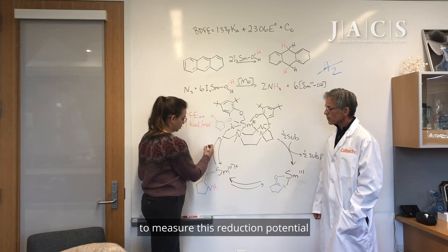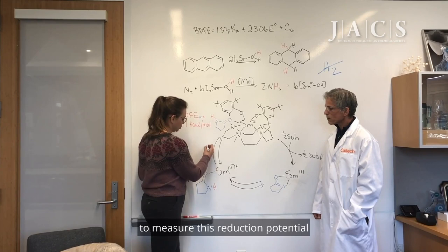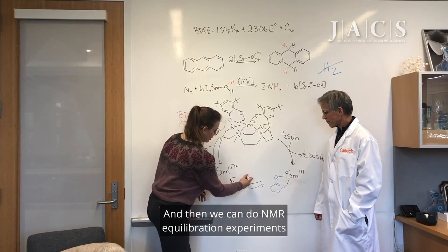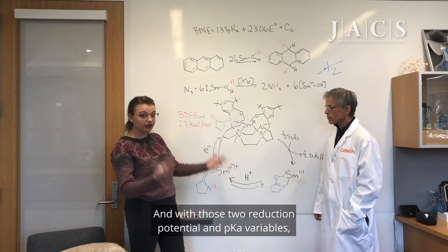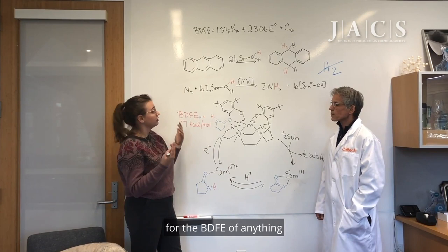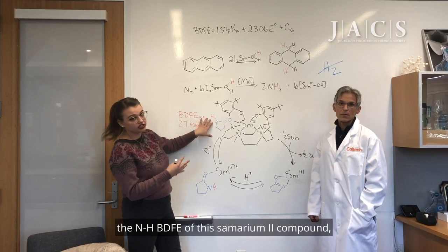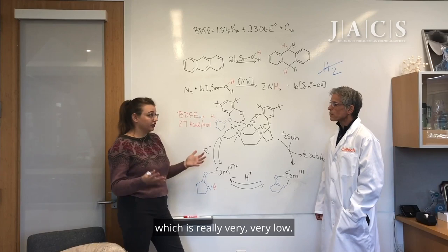More specifically, we can use electrochemistry to measure this reduction potential between the Samarium-3 and Samarium-2 oxidation states, and then we can do NMR equilibration experiments to measure the pKa of the Samarium-3 pyrrolidonate fragment. With those two reduction potential and pKa variables, we can then use the equation at the top for the BDFE of anything to calculate from experimental data the NH-BDFE of the Samarium-2 compound. And it comes out to this 27 kcals per mole value, which is really very, very low.